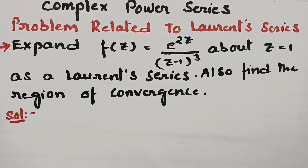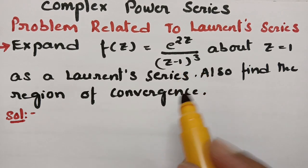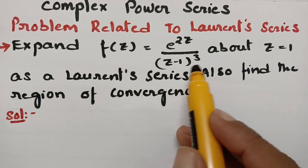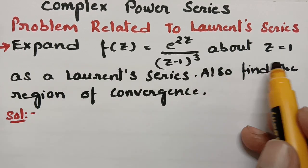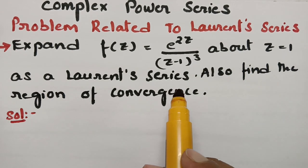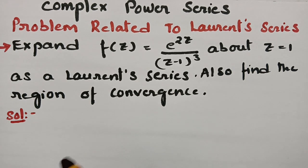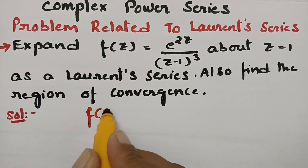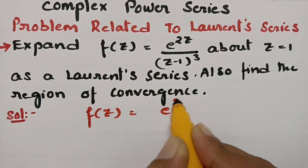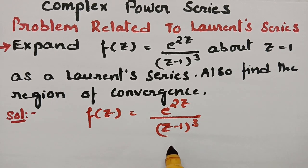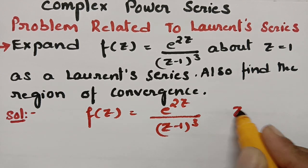Today's video is on a problem related to the Laurent series, a topic from complex power series. We are going to expand f(z) = e^(2z) / (z-1)³ about z = 1 as a Laurent series, and we also have to find the region of convergence. The function given is f(z) = e^(2z) / (z-1)³, and we want the Laurent series expansion of f(z) around z = 1.